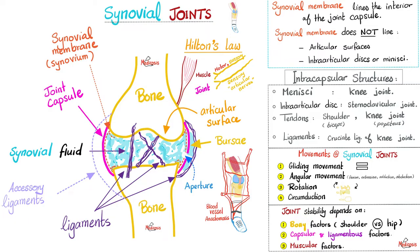What are the factors that determine joint stability? Number one: bony factors. The shoulder joint has a very shallow socket on the scapula — easily moved but easily dislocated. Conversely, the hip joint has a very deep socket — very difficult to dislocate but not as flexible, unless you're a ballet dancer. Number two: capsular and ligamentous factors — if the capsule is thick and the ligaments are robust, you'll have a stable joint. Number three: muscular factors — the stronger your muscles, the more stable your joints.